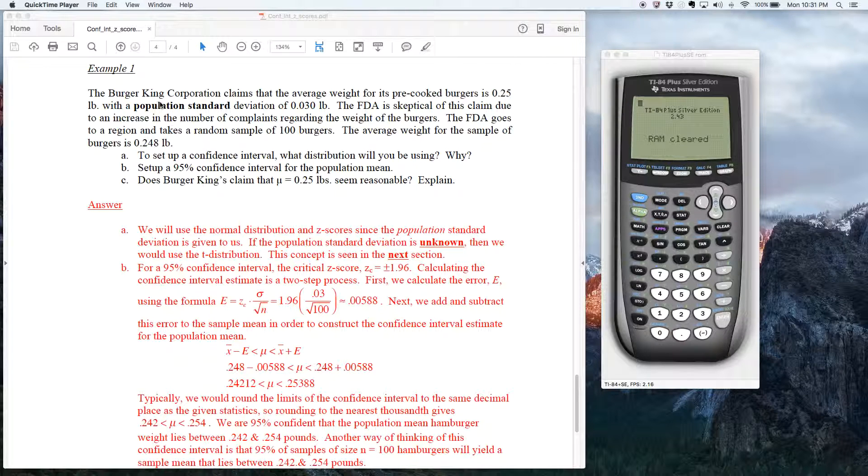So this is the Burger King example that's in the notes on Blackboard for week 10. Let's give this a read. It says the Burger King Corporation claims that the average weight for its pre-cooked burgers is a quarter pound with a population standard deviation of 0.03. The FDA goes to a region and takes a random sample of 100 burgers.